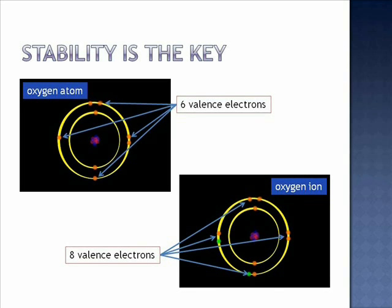Notice though that the nucleus remained constant throughout the process. The atom and the ion both have eight protons. So while the ion has the electron configuration of neon, it is still oxygen.